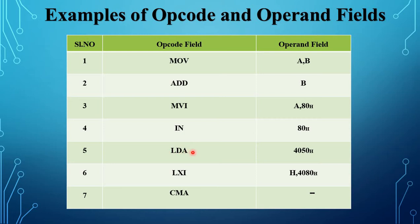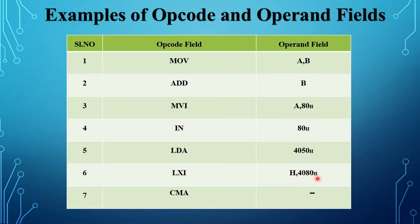Fifth instruction: LDA — load accumulator direct. The operand field is 4050, which is a 16-bit address. The 16-bit address content is loaded into the accumulator — that is the function of LDA. The next one is LXI H, 4080. LXI means load immediate. Here 4080 is 16-bit data, and this data is immediately loaded into the register pair.